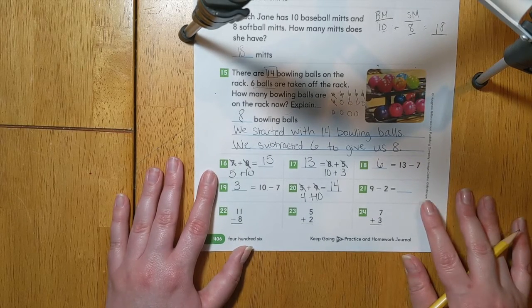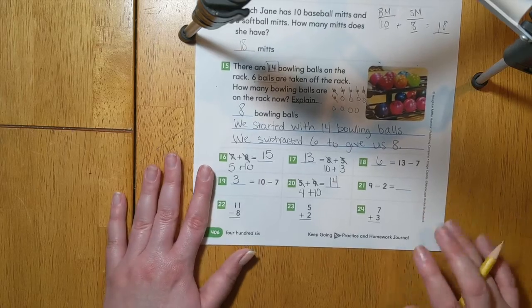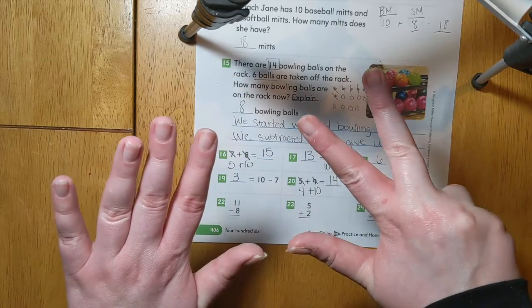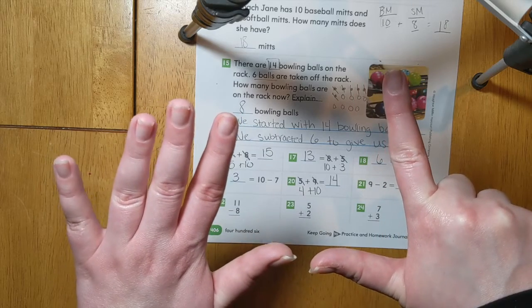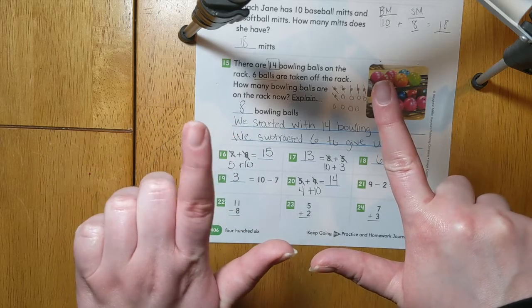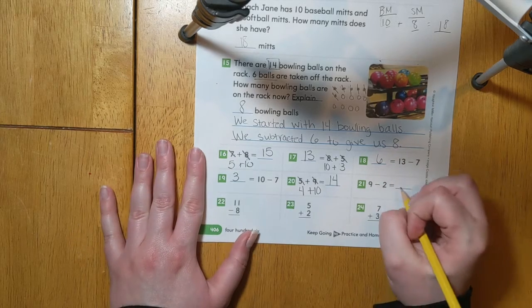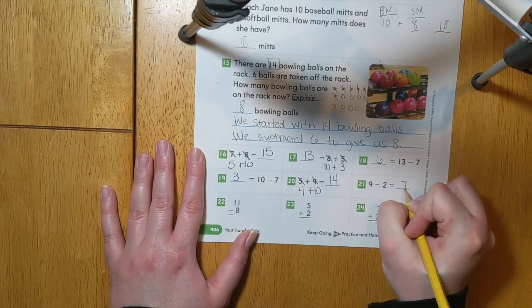Next, we have 9 minus 2. If I start with 9 and take away 2, 1, 2, it leaves me with 1, 2, 3, 4, 5, 6, 7. So 9 minus 2 equals 7.